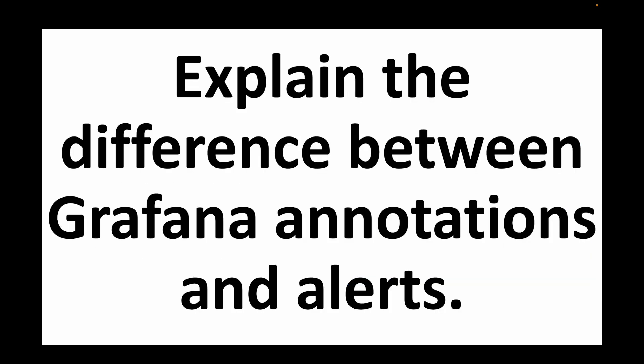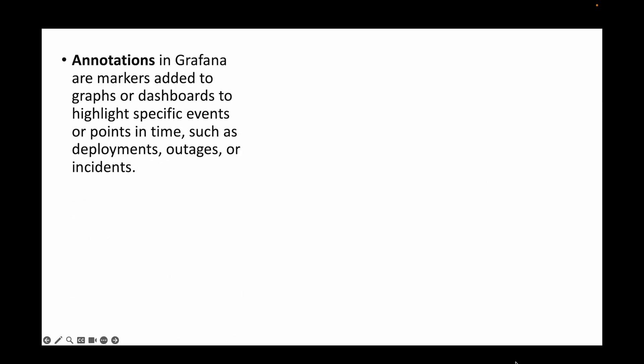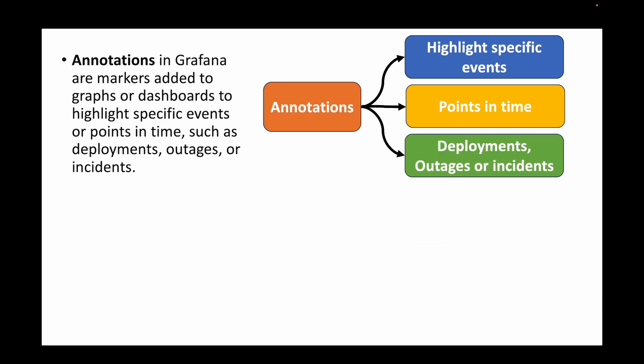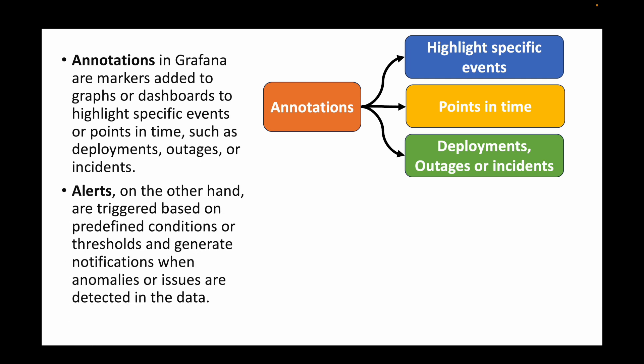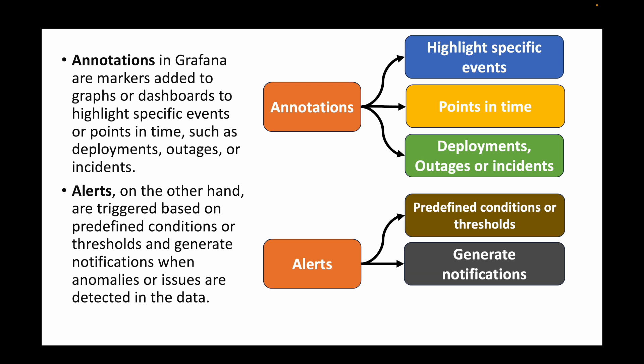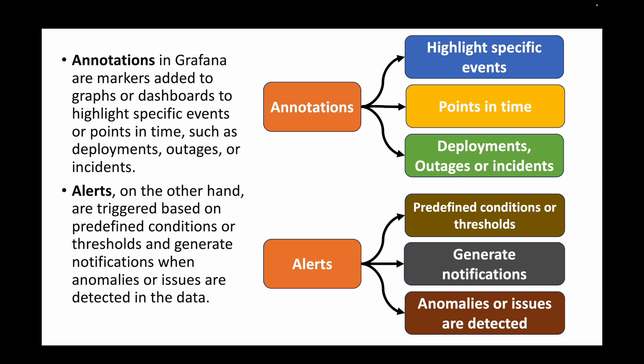The next question is: explain the difference between Grafana annotations and Grafana alerts. Grafana annotations are used to mark something important — creating a marker for specific events such as deployments, outages, or incidents on a timeline. Alerts, on the other hand, are notifications: if something goes wrong, a notification is triggered so the responsible team can take action. Annotations highlight specific events; alerts trigger notifications when something goes wrong based on predefined conditions or thresholds.